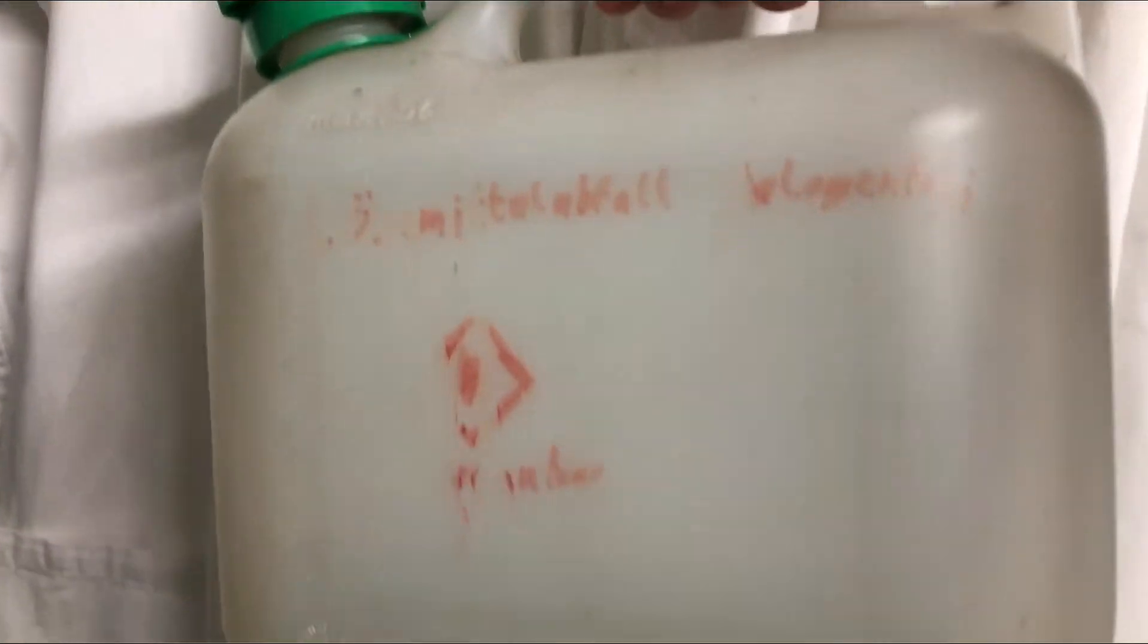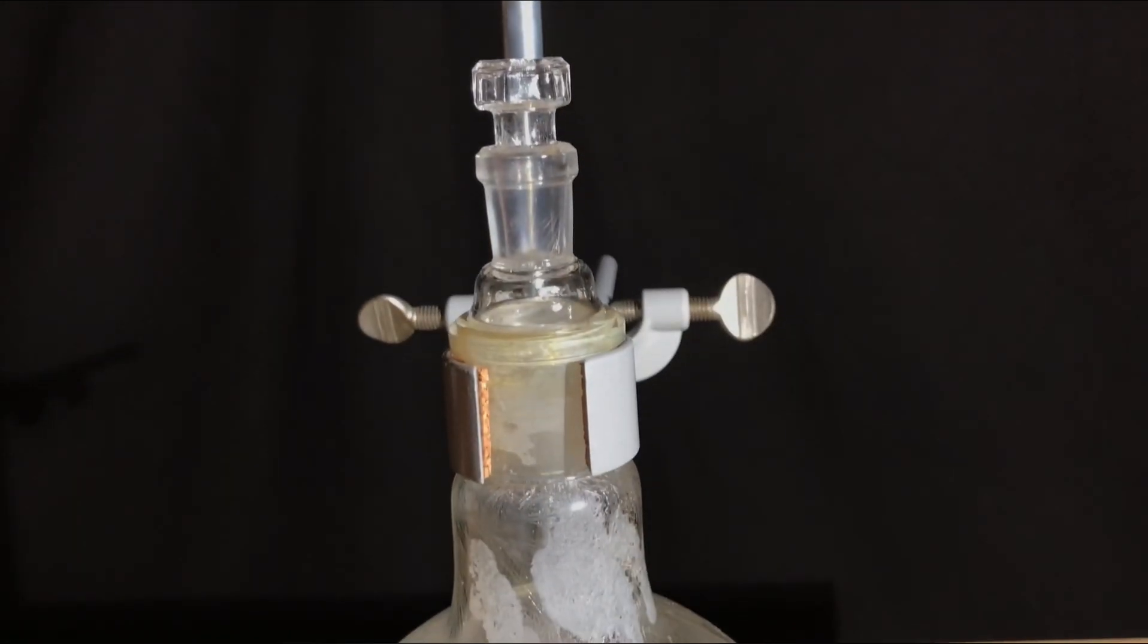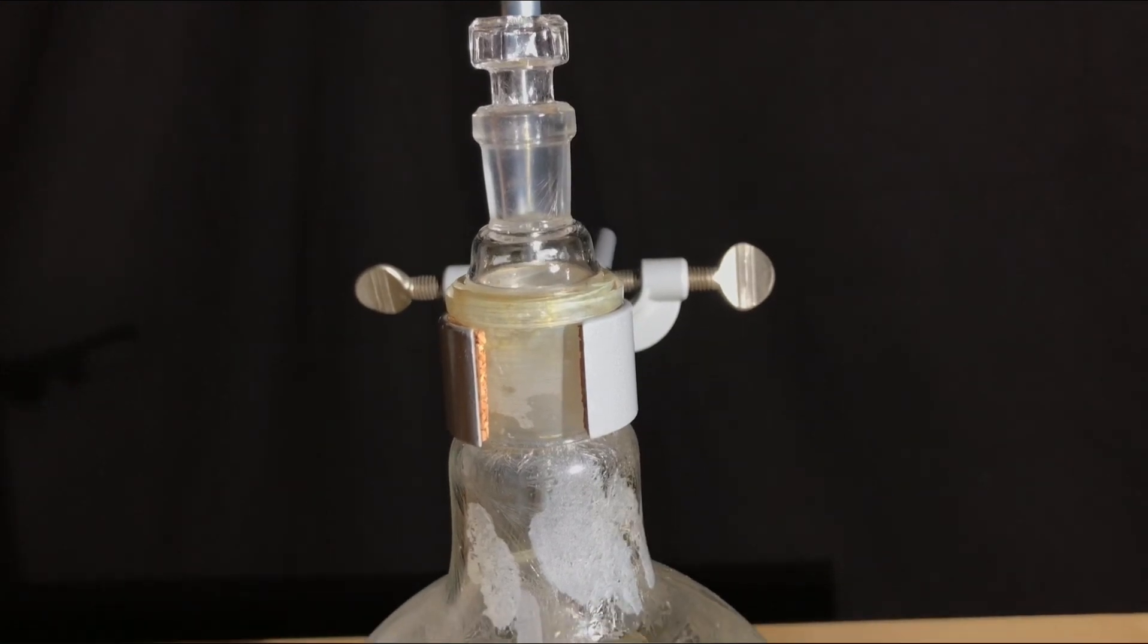Before cleaning the glassware normally, I rinsed it three times using acetone. The solvent was put into my halogen-free waste canister. And there you go.